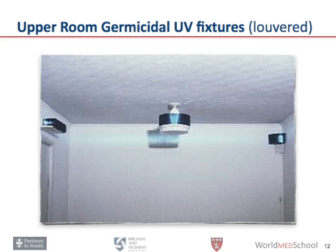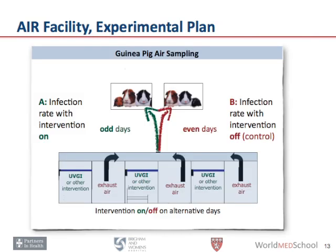We wanted to test the efficacy of these fixtures. On the bottom of this slide are shown six patient rooms with air going to ductwork connecting to two different guinea pig exposure chambers. On alternate days when the ultraviolet fixtures were turned on, the air went to guinea pig chamber A, and on the opposite days when the UV was off, the air went to guinea pig exposure chamber B. At the end of several months, with patients continually occupying the ward, the difference in infection rate between the two guinea pig colonies was a direct reflection of how infectious the patients were and the effectiveness of the intervention.